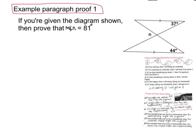If you're given the diagram shown as your hypothesis, can I prove that the measure of angle N is 81 degrees? The first thing I'm going to do is look at what's been given to me — that's my hypothesis, that's my diagram.